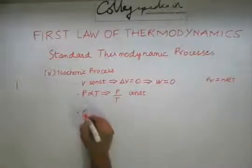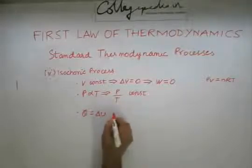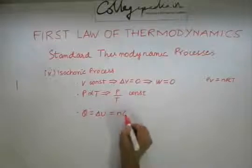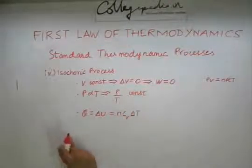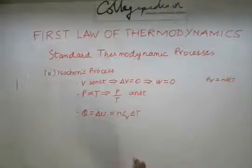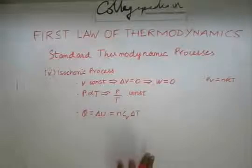If you look at Q, this gets modified to delta U only because the W term is not there anymore. Hence Q will be equal to n Cv delta T. As I told you before, this is one of the standard special conditions on the molar heat capacity — in the case of a constant volume condition, the molar heat capacity takes the special value Cv, which is the heat capacity at constant volume.